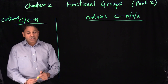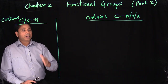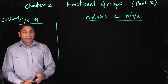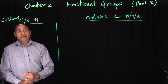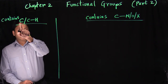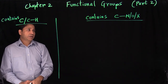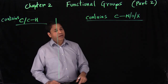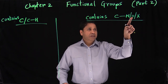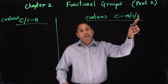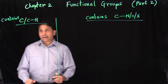We have different categories of functional groups. I divided those functional groups into three different categories. Category one contains only carbon and carbon-hydrogen bonds. Category two is carbon bonded to nitrogen, oxygen, or halogen. There's one more category we'll see later.